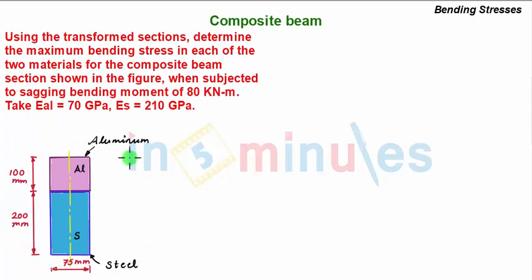This is the composite beam section given when the beam is subjected to a sagging bending moment of 80 kN-meter. Take E_AL, AL is for aluminium, as 70 GPa and E_S is for steel as 210 GPa.